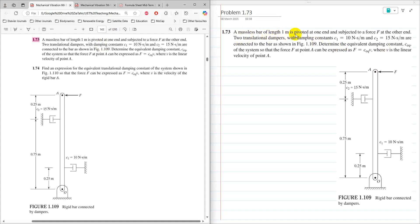A massless bar of length 1 meter is pivoted at one end and subjected to a force F at the other end. Two translational dampers with damping constants C1 and C2 are connected to the bar. Determine the equivalent damping constant CE of the system so that the force F at point A can be expressed as F equals C_equivalent times V, where V is the linear velocity of the point.